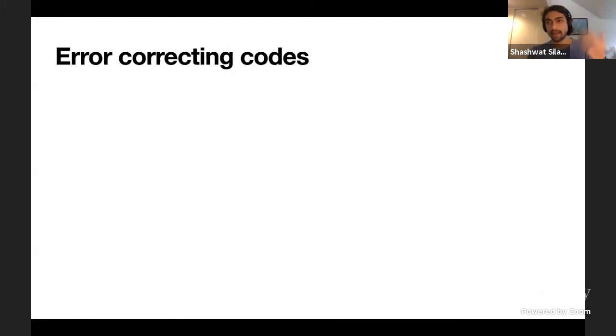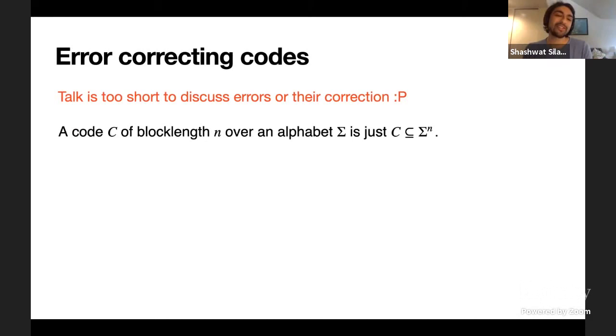All right. Thank you. Can we continue with Shashwat, please? Hi, I'm just going to share my screen. Hi, so I'm Shashwat. I'm finishing my PhD at Stanford. My advisor is Mary Wooters, and I'm moving to Google in a couple of months, but I'm very interested in staying engaged with the theory community. And I thought I'd share like a small aspect of my research with you guys. So I work on error correcting codes, but this talk is very short, so I'm not going to be able to tell you anything about errors or their correction, but I can still explain some kinds of problems I'm interested in.